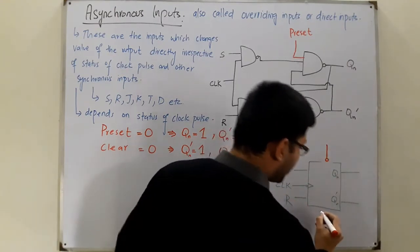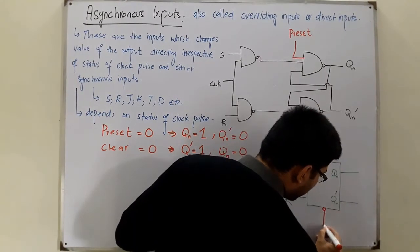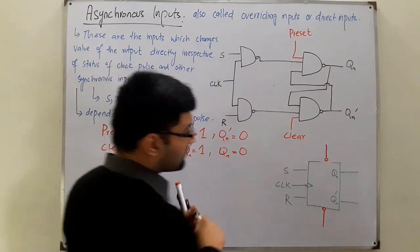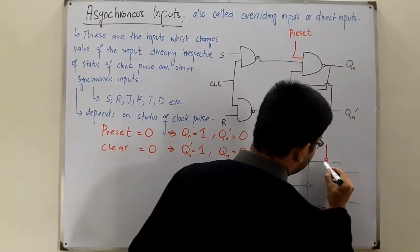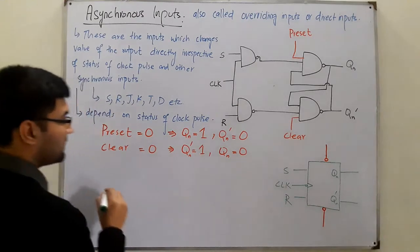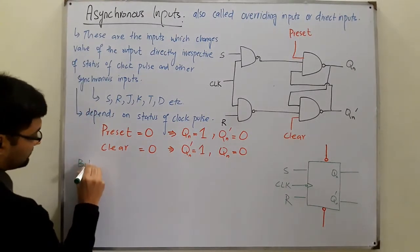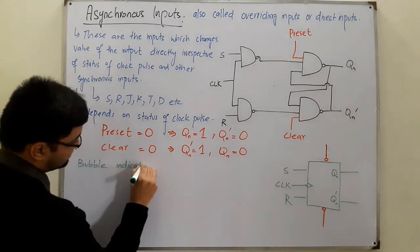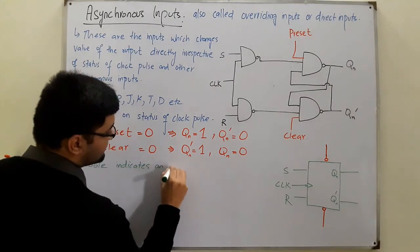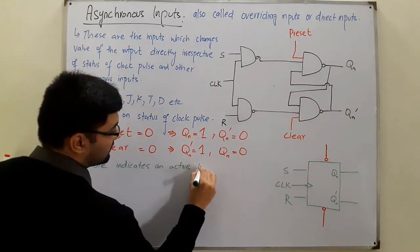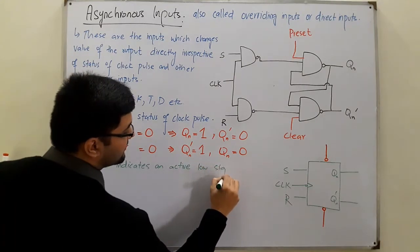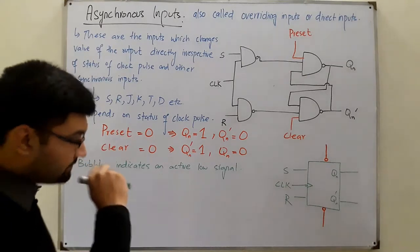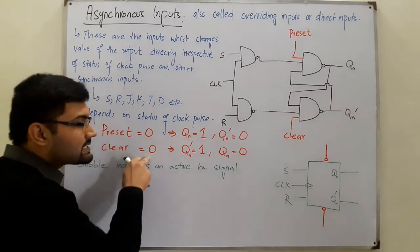The bubble on the preset and clear lines shows that these are active low signals. The bubble indicates an active low signal, meaning whenever it is zero, it applies some changes.